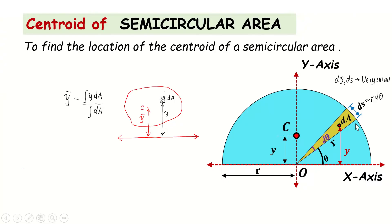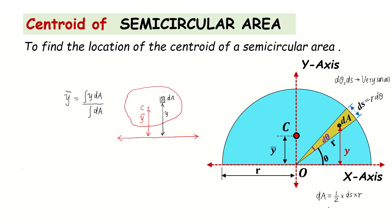Since the sector is in triangular form, the area dA can be written as one-half times base times height. The base is ds and the height is r. Since ds = r·dθ, I can substitute that in: dA = (1/2) × ds × r = (1/2) × r·dθ × r = (1/2) r²·dθ.